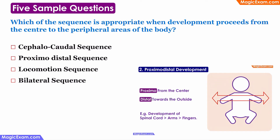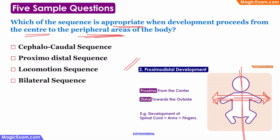The next question asks: which sequence is appropriate when development proceeds from the center to the peripheral areas of the body? Previously we have seen that proximodistal development starts from the center of the body and moves towards the peripheral areas. Development starts from the spinal cord, moves towards the arms, and then towards the fingers. This is proximodistal development. Therefore option two is the correct answer.